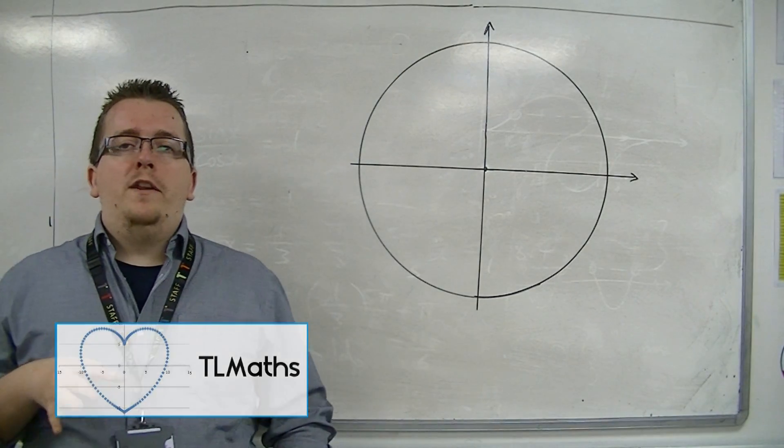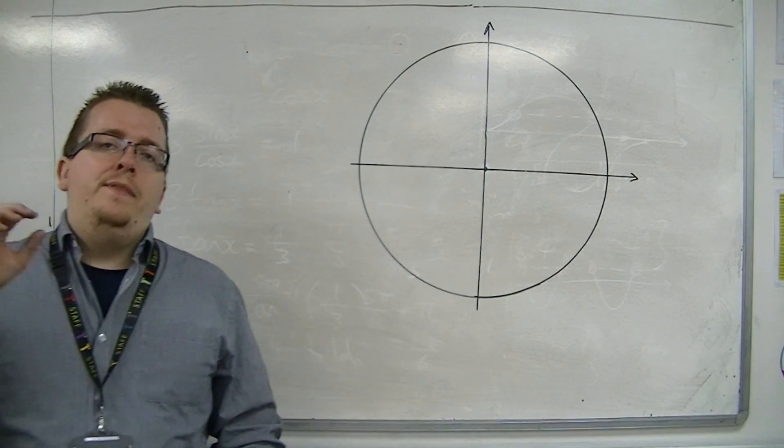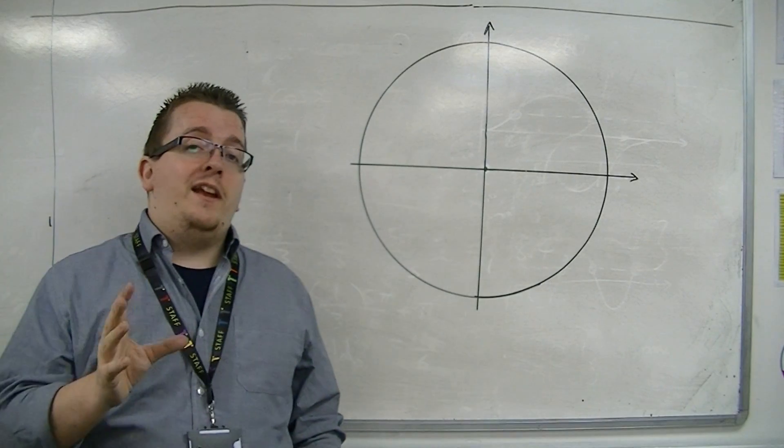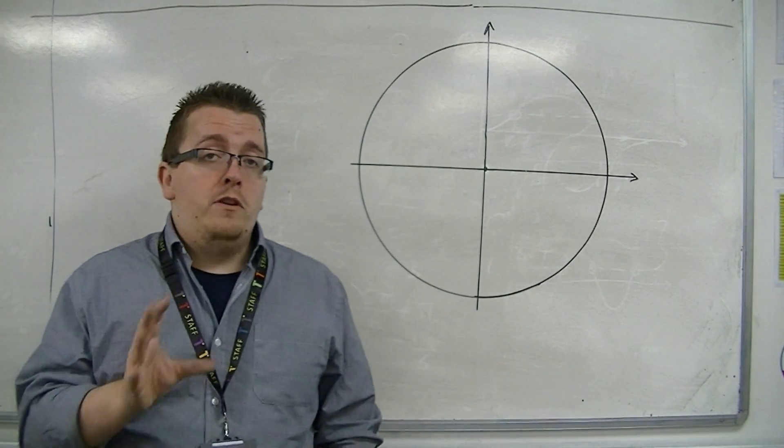We've already met one of the trigonometric identities. That was tan x equals sin x over cos x. It's very important that you remember that.